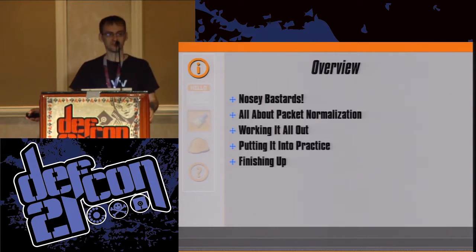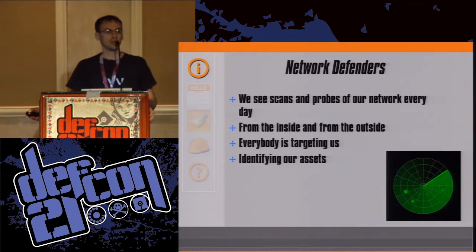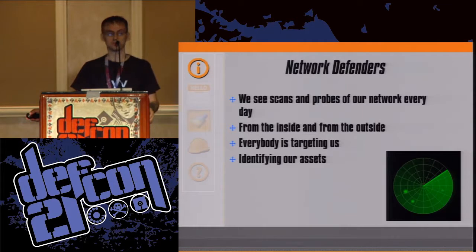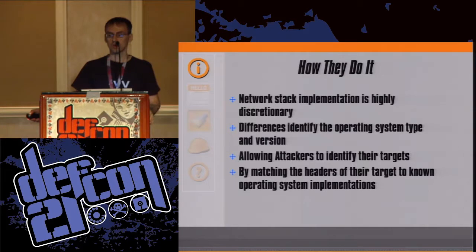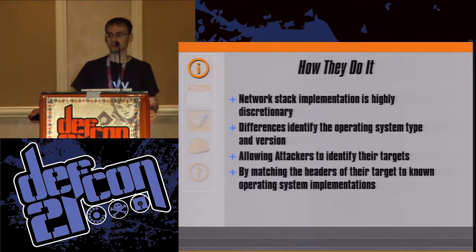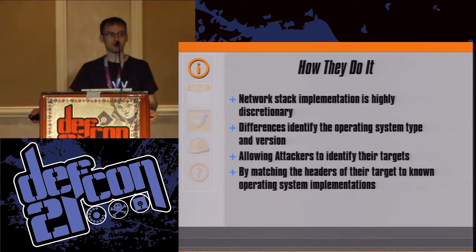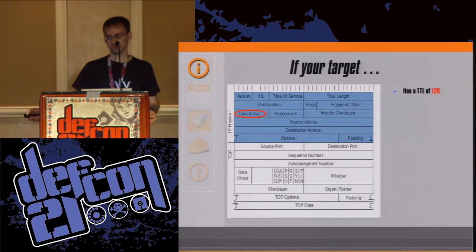So let's start off with those nosy bastards. As network defenders, we see scans and probes of our network every single day — from the outside, from the inside. Everybody is targeting us, identifying our assets. Network stack implementation is highly discretionary. Differences identify the operating system type and version, allowing attackers to identify their targets by matching packet headers to known OS implementations. For example, if your target has a TTL of 128...